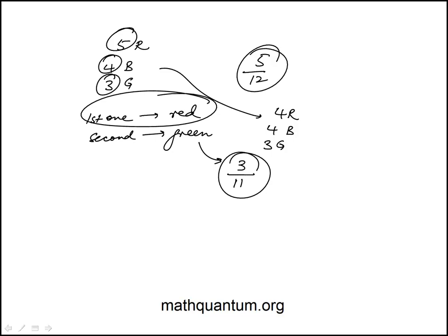Now these are independent events, and the probability that the first one is red and the second one is green is just a product of those two. So that's going to be, actually we can simplify this, five over 44, answer choice A.